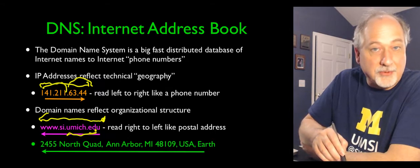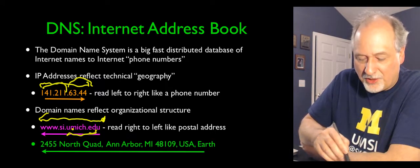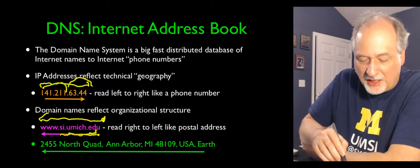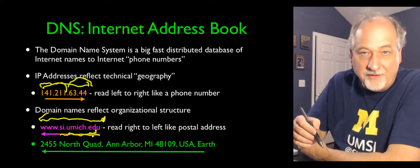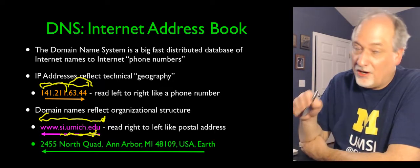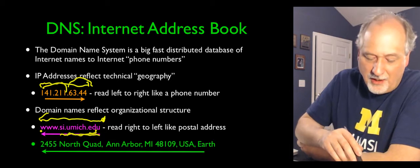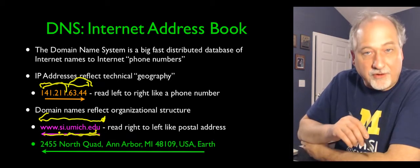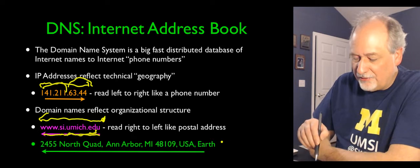Umich.edu means the particular educational institution University of Michigan. Si.umich.edu means the school of information at the University of Michigan, not all schools, just a particular one. And then www is a particular server at that school. It reads like a postal address.